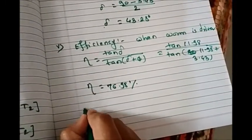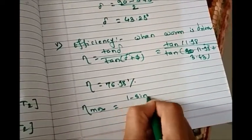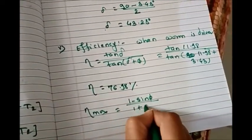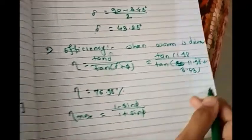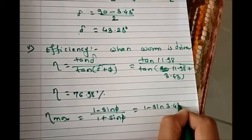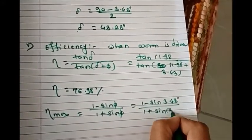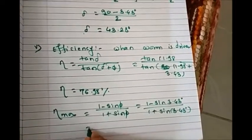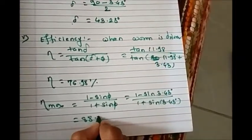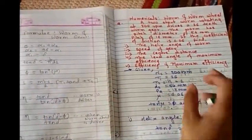And maximum efficiency equals 1 minus sin phi divided by 1 plus sin phi. So it is 1 minus sin of 3.43 degrees divided by 1 plus sin of 3.43 degrees, which equals 88.70 percent.